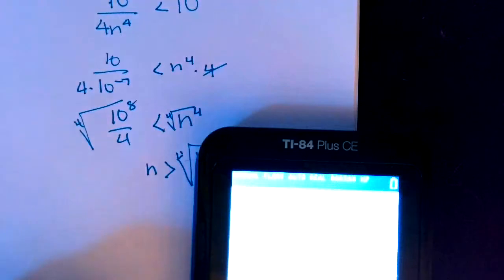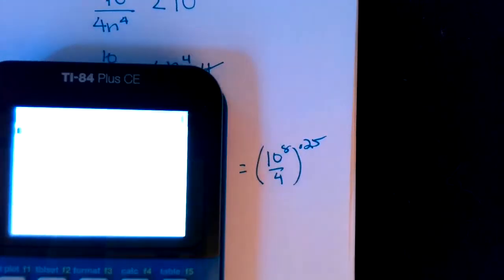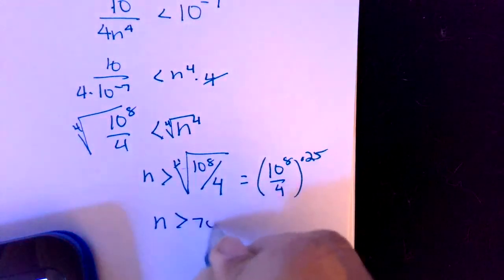So here we go. I've got a place without a glare. So you're going to have to trust me on this one. So parenthesis, 10 to the 8th, divided by 4, close the parentheses, raise it to the 0.25, and I need an n greater than 70.7.